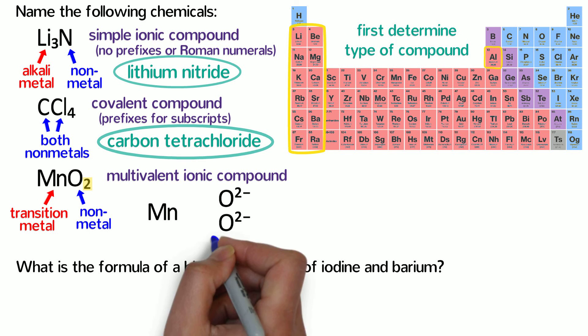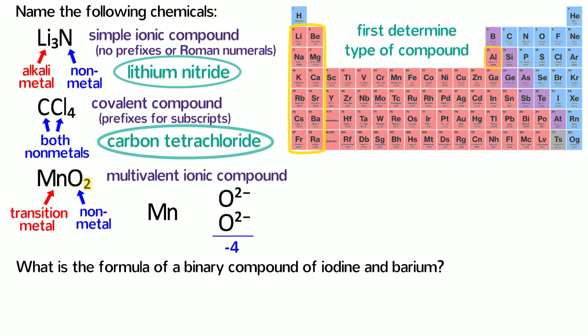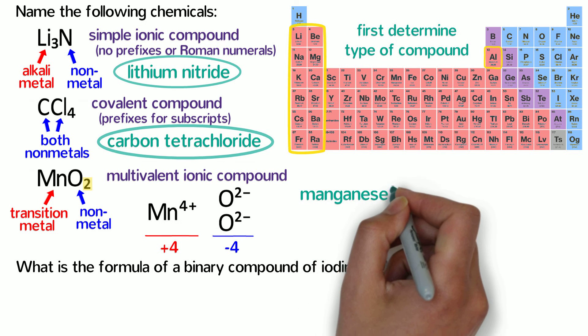If we add up the charges of the anions, we get negative 2 plus negative 2 equals negative 4, and to balance that, the cations must have a positive 4 charge. Since there's only one manganese, its charge must be positive 4. Therefore its name is manganese(IV) oxide.